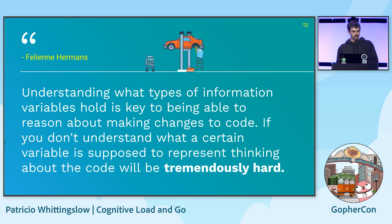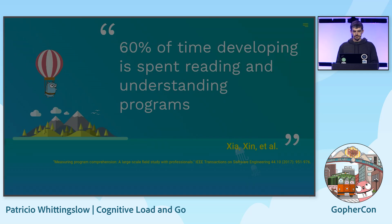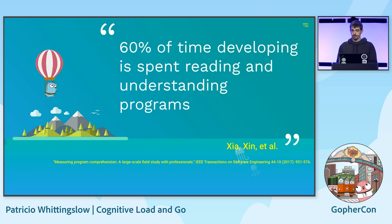What does Felina Herman say in her book? "Understanding what types of information variables hold is key to being able to reason about making changes to code. If you don't understand what a certain variable is supposed to represent, thinking about the code will be tremendously hard." Let's think back to when we started out with the Python code — we had little idea of what the arguments contained and had to dive deep into complex logic. Experts say that around 60% of our time is spent reading and understanding code, and thus we should strive to make that part as clear and straightforward as possible.